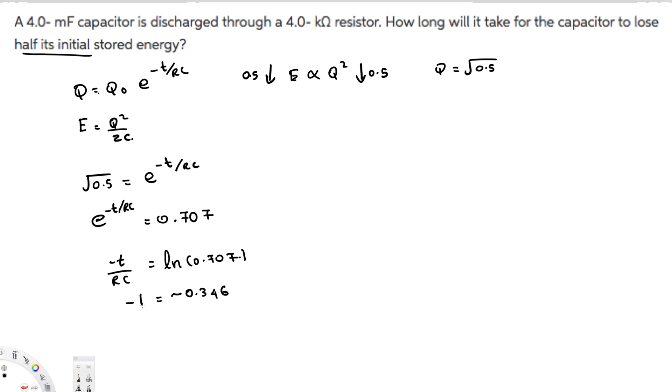Rearranging this, we have negative t equals negative 0.346 times RC. Therefore, t equals 0.346 times RC.